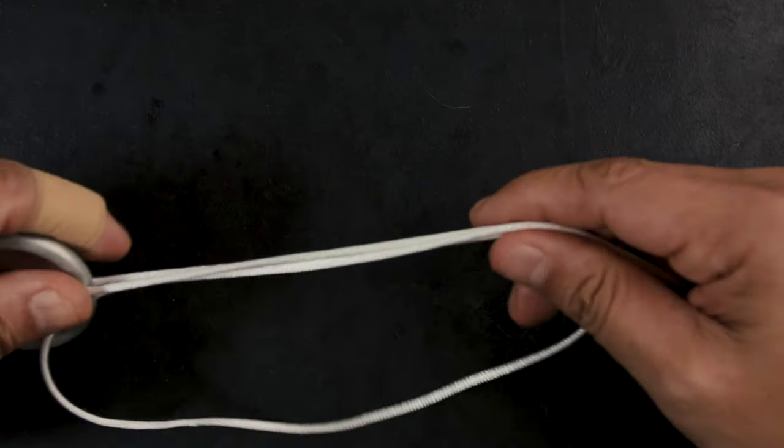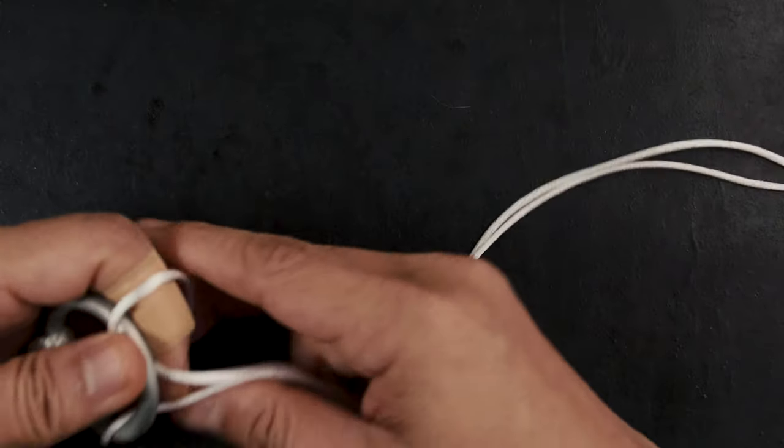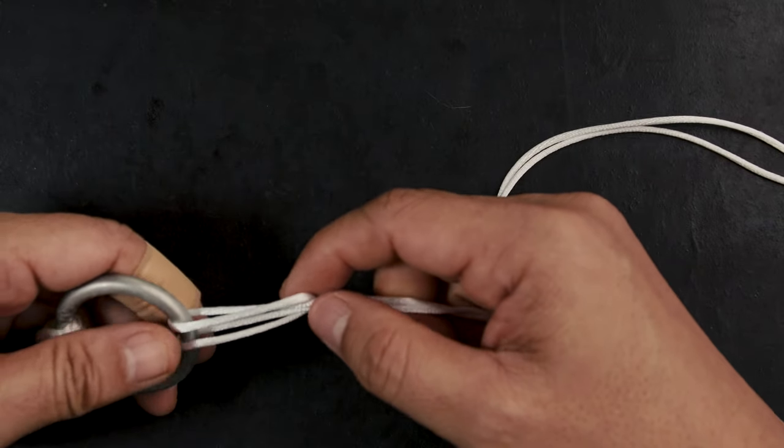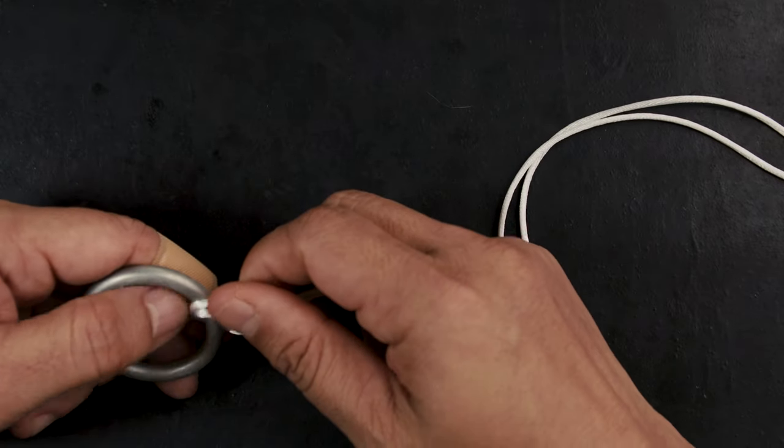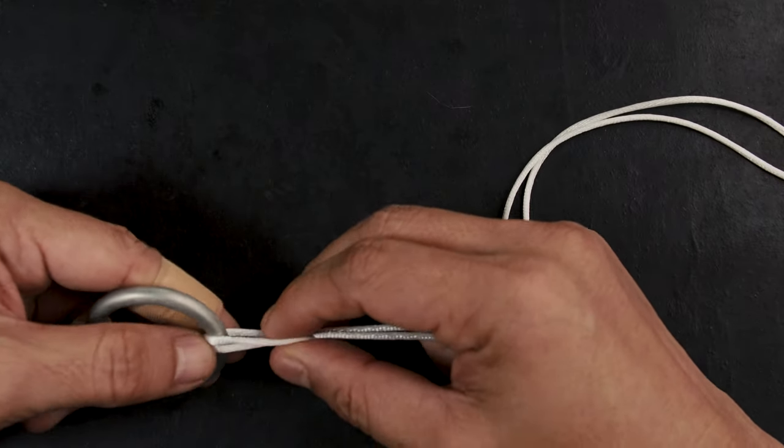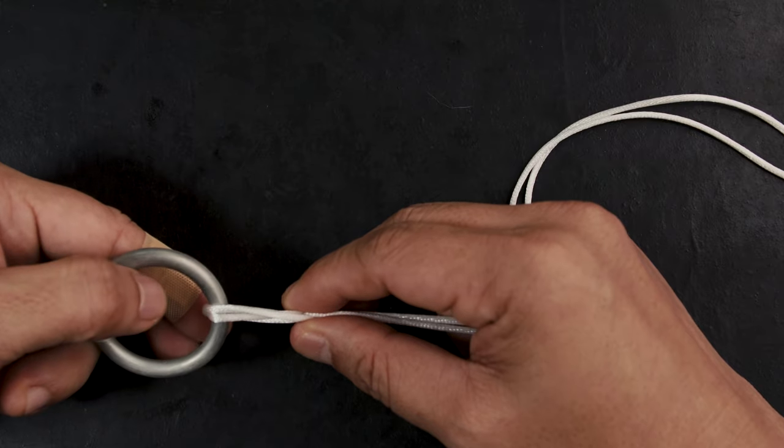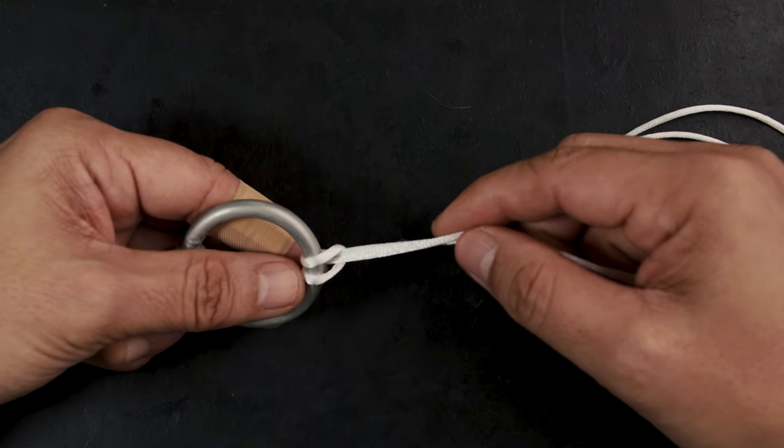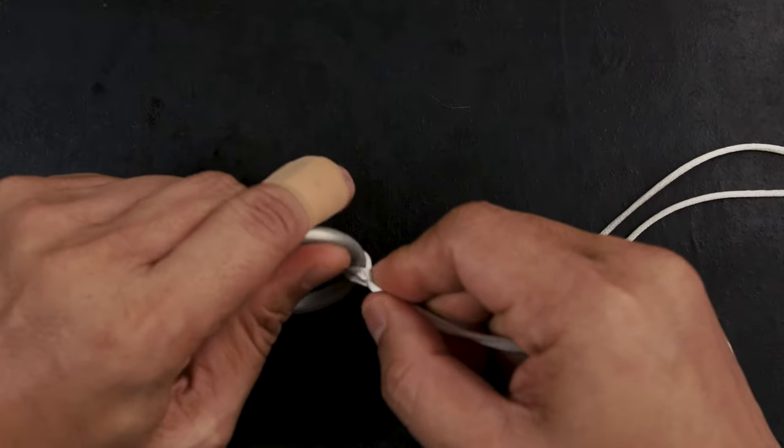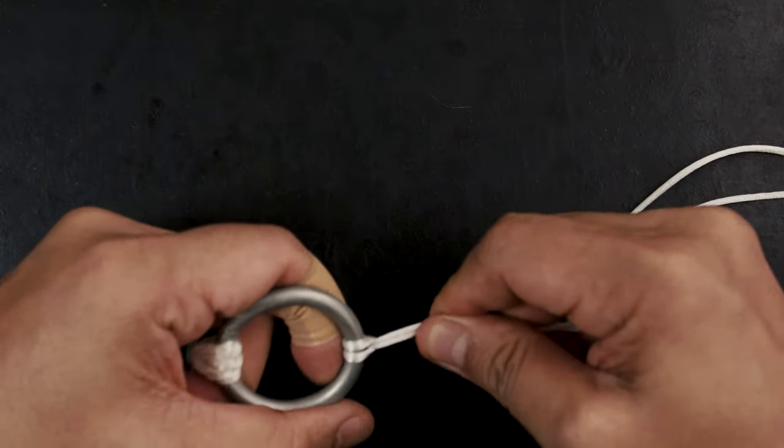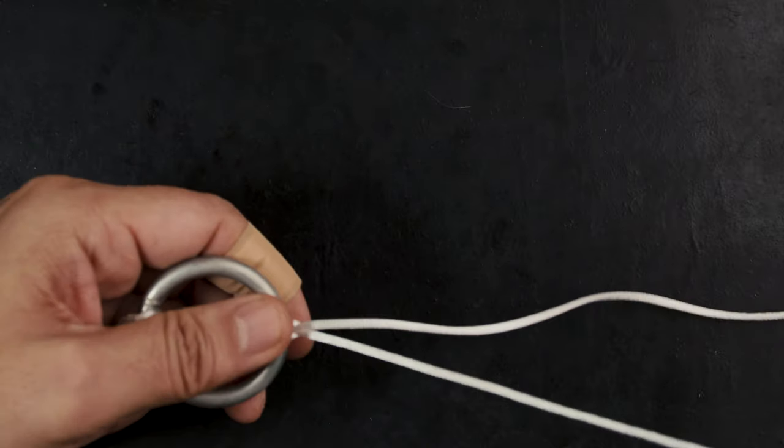Like that, and then it'll form a double loop right there. And the most important thing here is that it shouldn't cross. It shouldn't be like that when you tighten it. It should be like that. Very, very important.